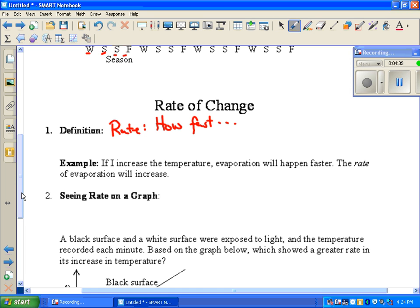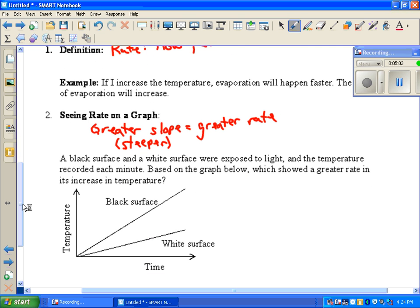So seeing rate on a graph, greater slope means that you have a greater rate. Greater slope means that it is steeper. So if I look at this example, somebody took a black surface and a white surface, exposed them to light. They absorbed the energy, and they got hotter. And which showed a greater rate? Well, which one is steeper? The black line goes up faster than the white line, so it's steeper. So the black had a greater rate because it was steeper.